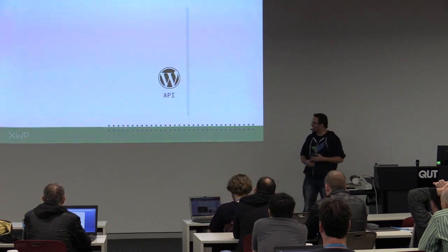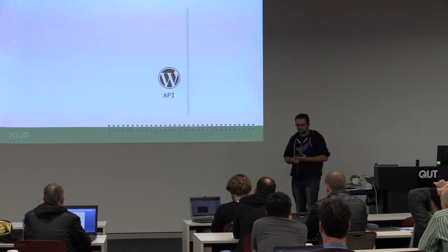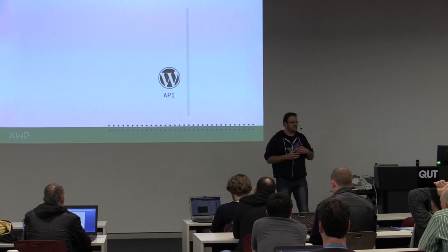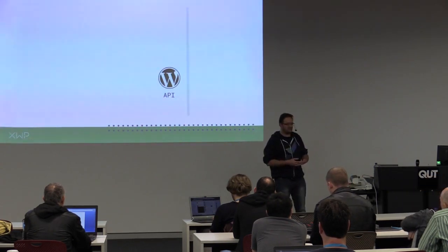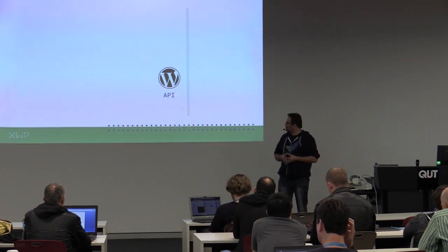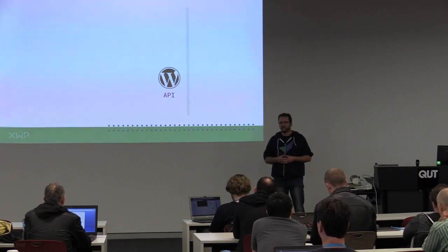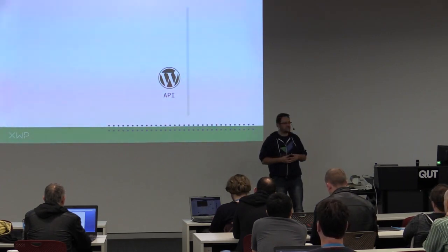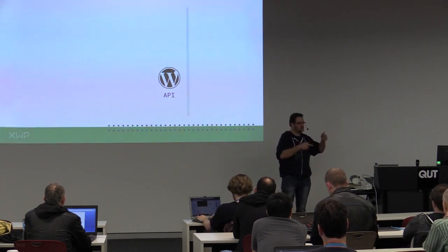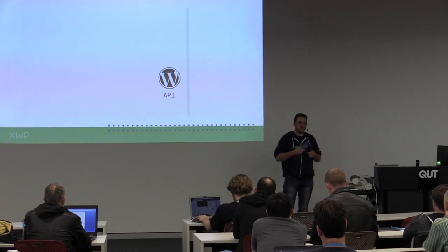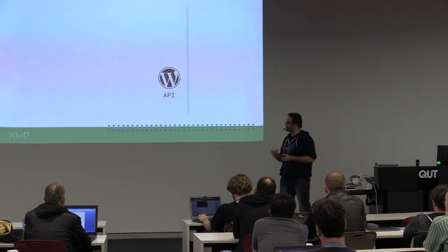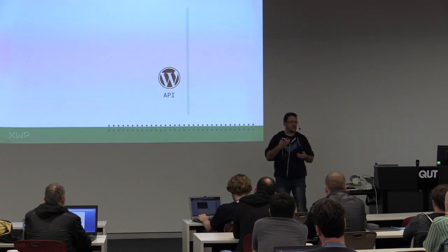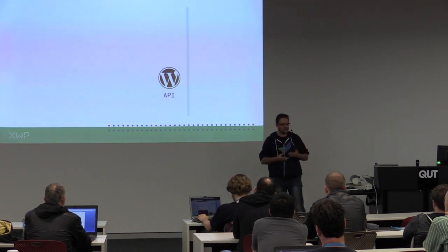So we're starting with the WordPress REST API. We looked at a number of ways we're going to use it. When we started this project, I think it was before the content endpoints were inside core — it was just after the REST API came to core. So it was the right time to start looking at this project and how we're going to build it.